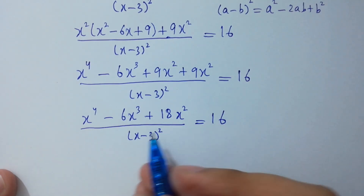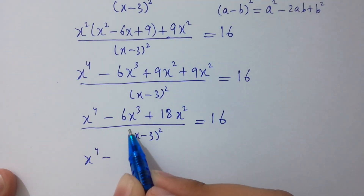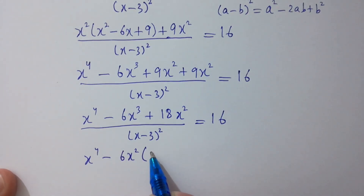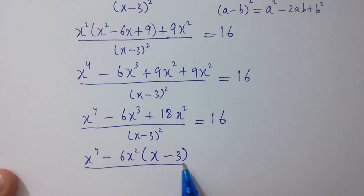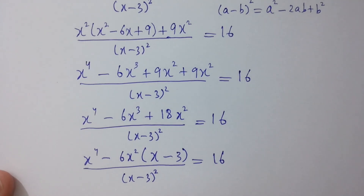Here we can factor out 6x²: we get x⁴ minus 6x² times 3, which is 18, over (x-3)² equals 16.